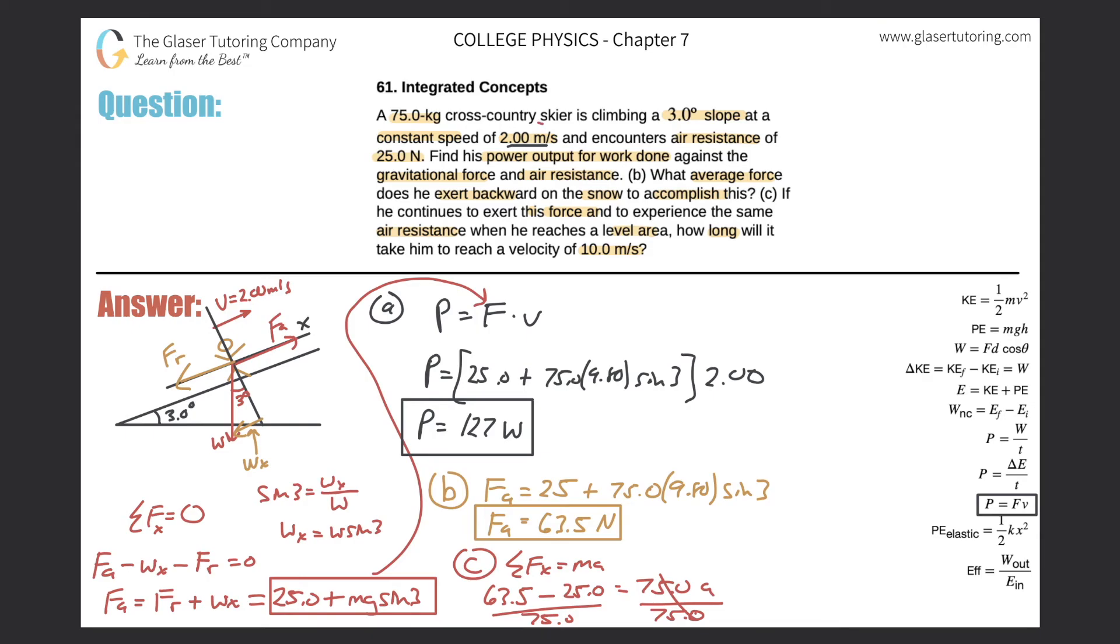Well, we know the initial speed, 2 meters per second. We know the final speed, 10 meters per second. We just found the acceleration here. So you got to think back to kinematics. How does this formula look? Final velocity is equal to the initial velocity plus the acceleration times time.